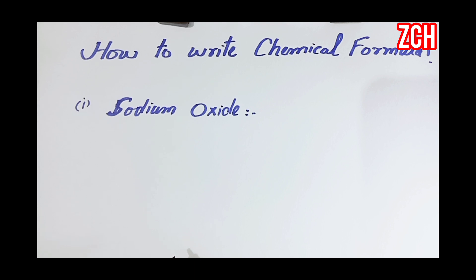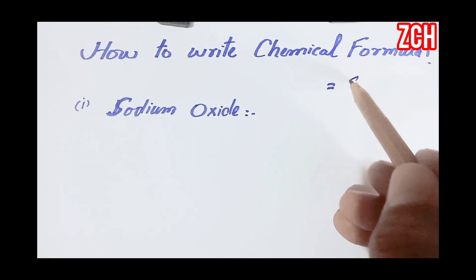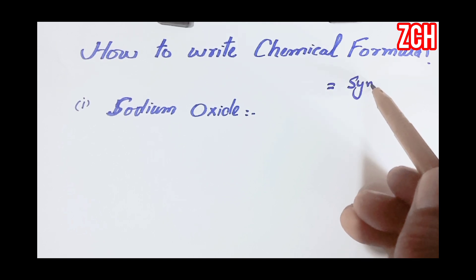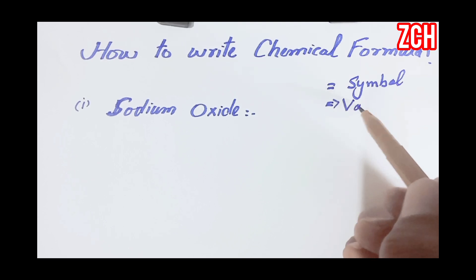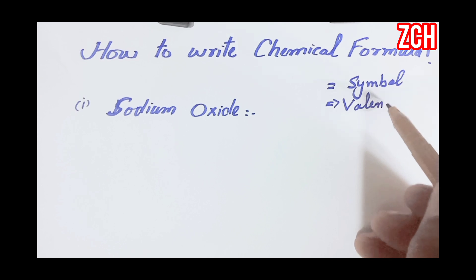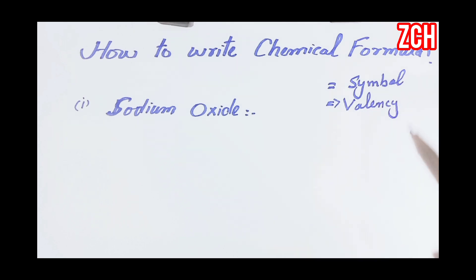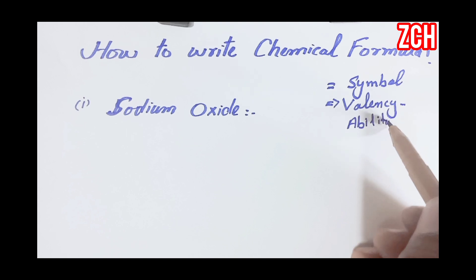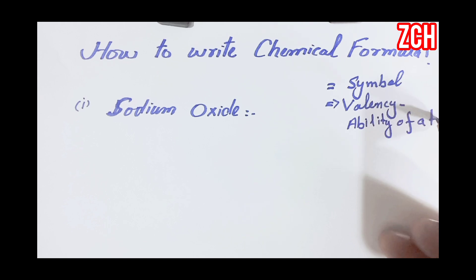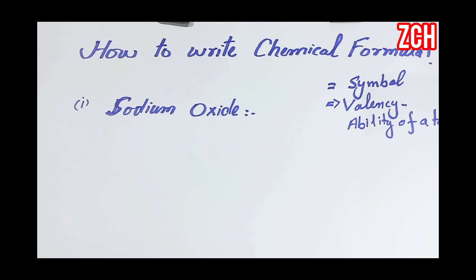There are two things by which we can write the chemical formula of any compound: first is the symbol, and second is the valency. Valency is the combining power or ability of an atom by which it can attract or bind with other atoms. It is the ability of an atom or molecule by which it can bind with other atoms.